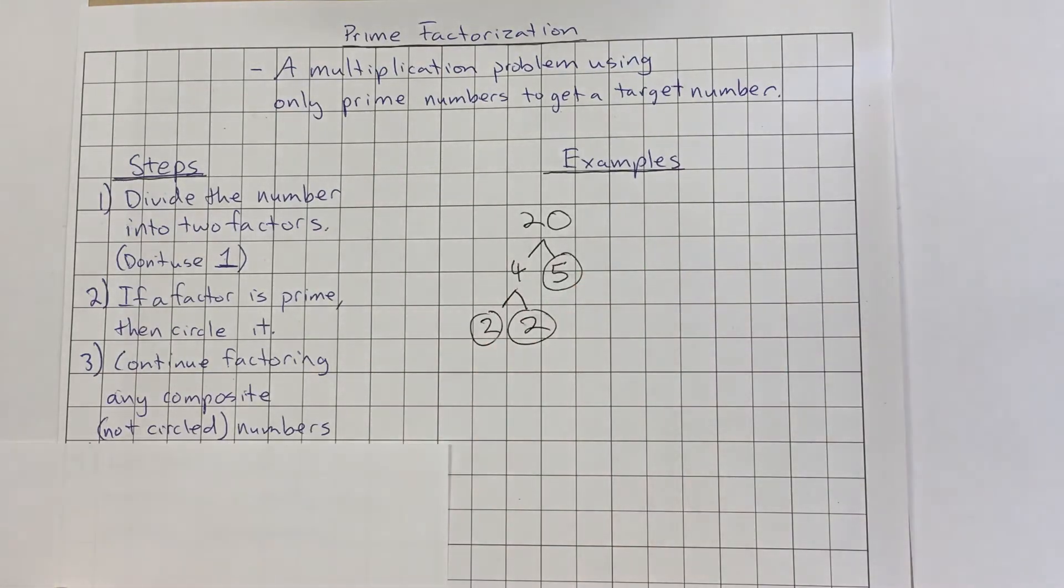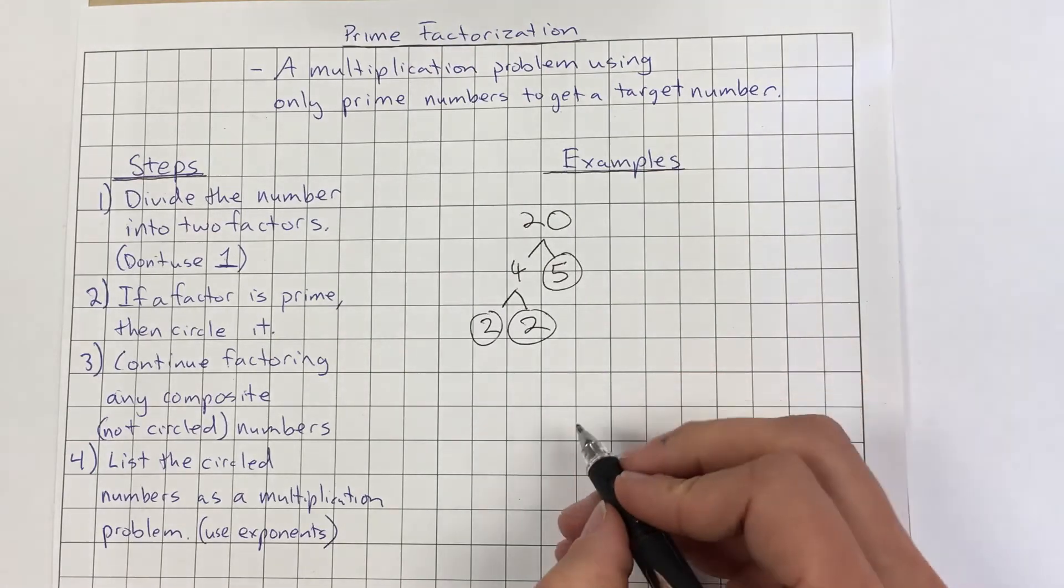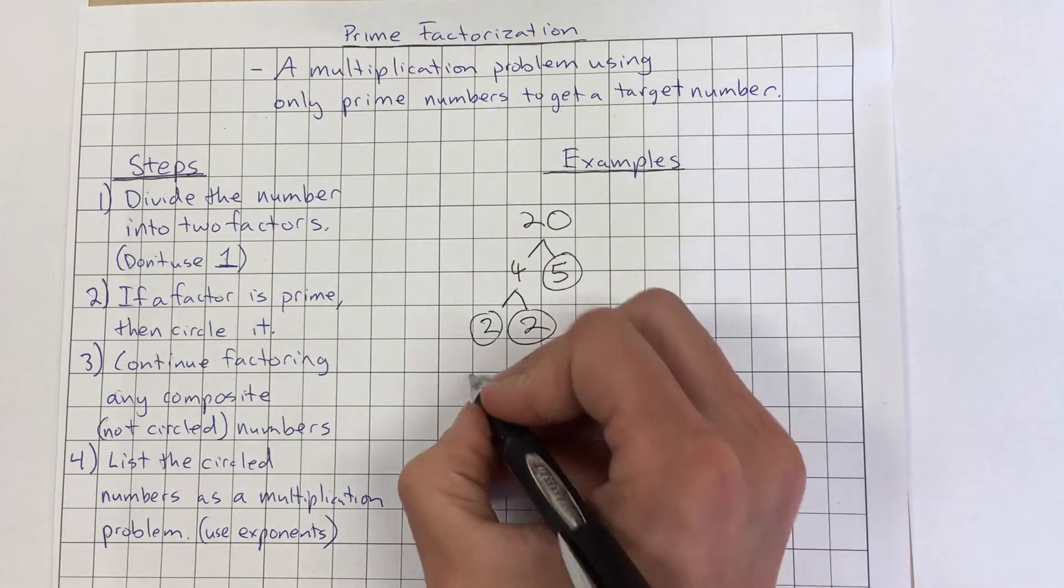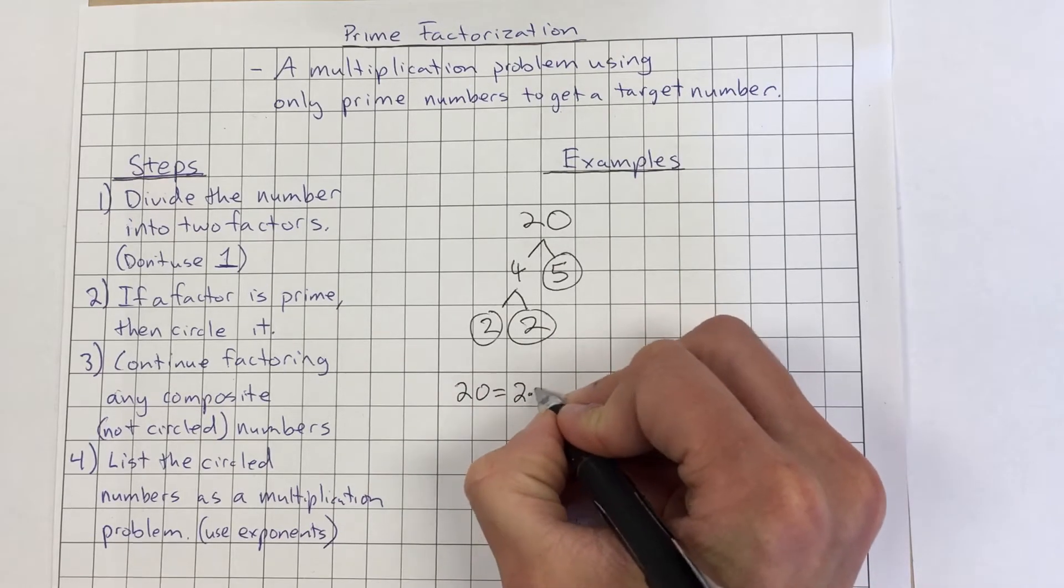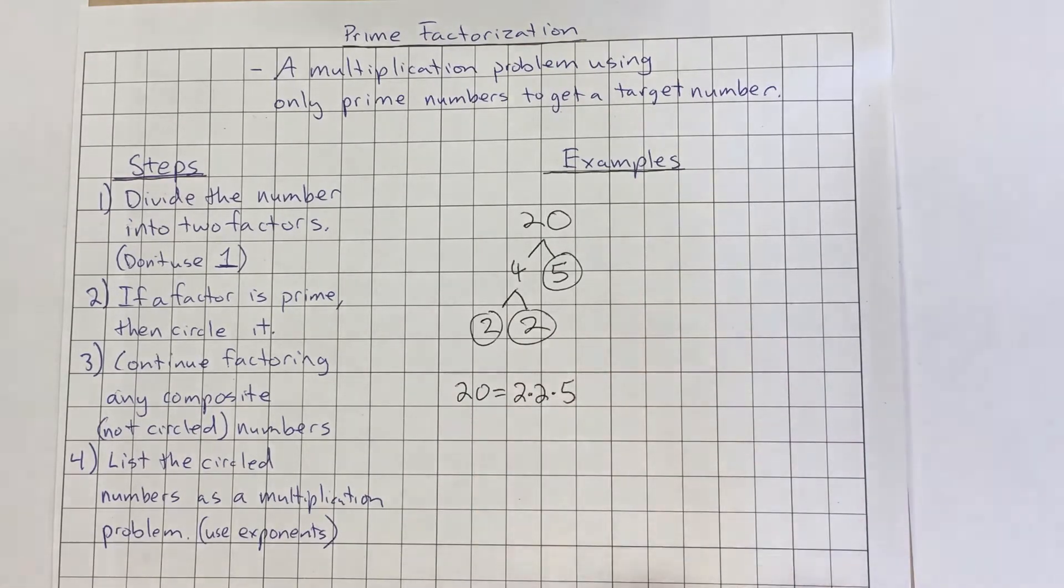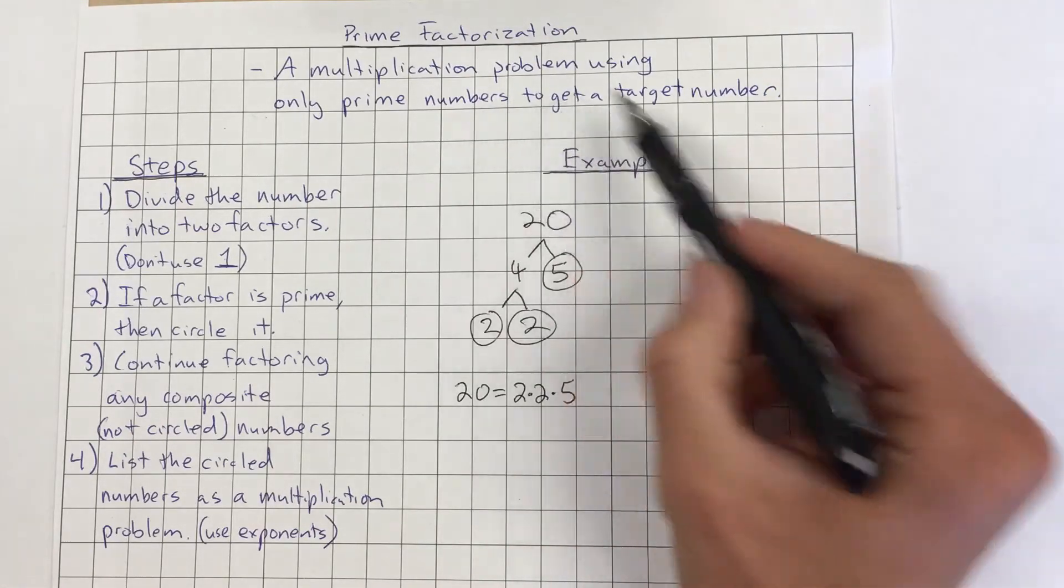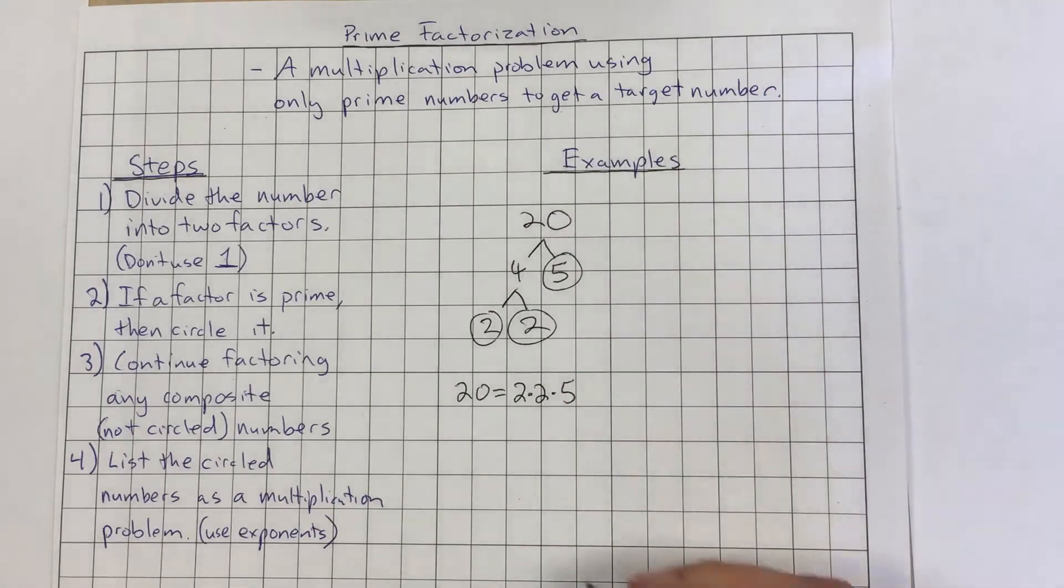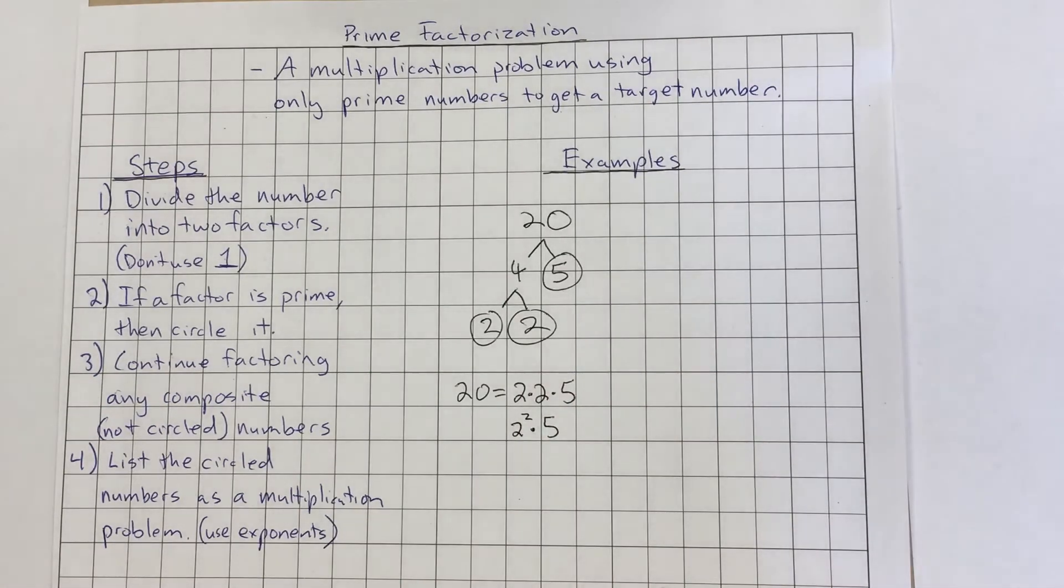We have no numbers left. So then all you got to do at that point is list the circled numbers as a multiplication problem. I recommend using exponents at the very end, but sometimes it's useful. And sometimes teachers might want you to just list them out. So we could simply write 20 equals 2 times 2 times 5. And that's it. That's a multiplication problem using only prime numbers that gets you to our target number. We could also write it as 2 squared times 5. That means the same thing.